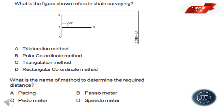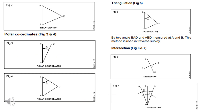We are going to show the chain surveying and the chain of points. We are going to show the balance method to determine the required distance. Here we have a few pictures and we will use some methods to locate the points: the rectangular coordinate method, the trilateration method, polar coordinates, and triangular intersection.